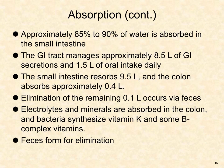Approximately 85 to 90% of water is absorbed in the small intestine. The GI tract manages approximately 8.5 liters of gastrointestinal secretions and 1.5 liters of oral intake daily. The small intestine reabsorbs 9.5 liters, and the colon absorbs approximately 0.4 liters. Elimination of the remaining 0.1 liters occurs via feces. Electrolytes and minerals are absorbed via the colon. Bacteria synthesize vitamin K and some B-complex vitamins. Finally, feces form for elimination.